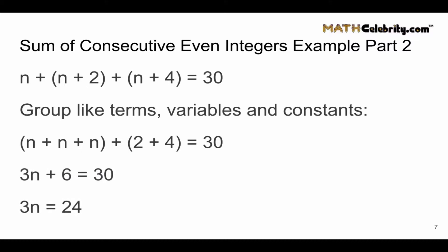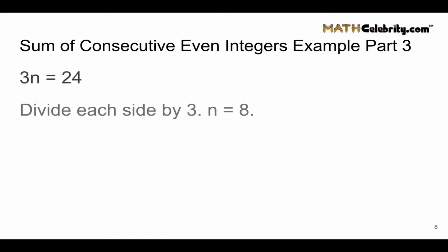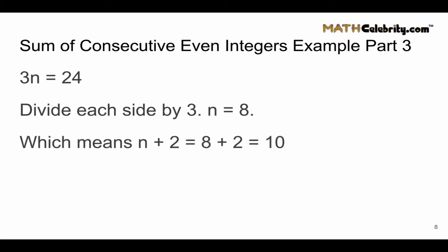If we subtract 6 from each side, we get 3n equals 24. Dividing each side by 3, we get n equals 8 — this is the first of three consecutive even integers. To get the next one we add 2, so n plus 2 is 8 plus 2 equals 10. The third consecutive even integer is n plus 4: when n is 8, 8 plus 4 equals 12. The three consecutive even integers that add up to 30 are 8, 10, and 12.